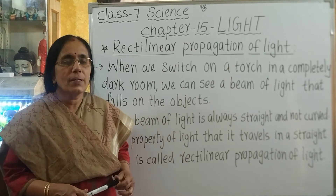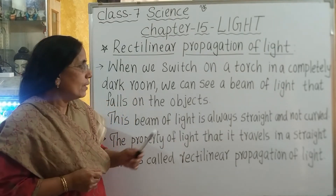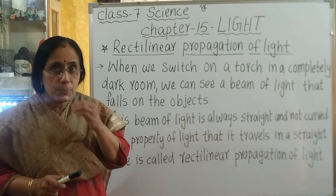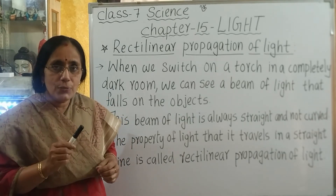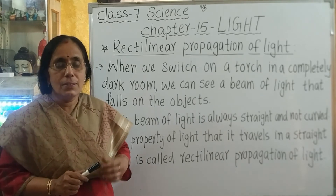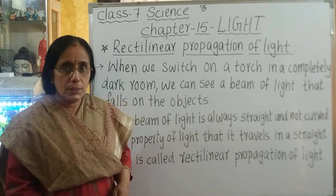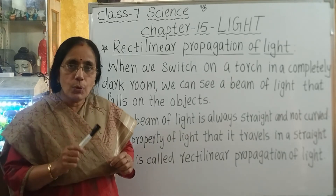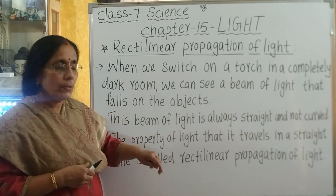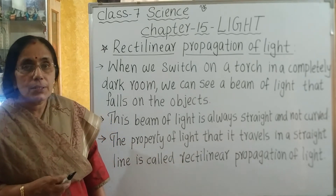Now let us discuss the next topic: rectilinear propagation of light. When we switch on a torch in a completely dark room, we can see a beam of light falling on objects. That beam always travels in a straight line, not curved. This property of light — that it moves in a straight line — is known as rectilinear propagation of light.